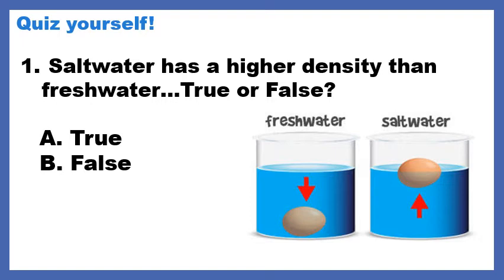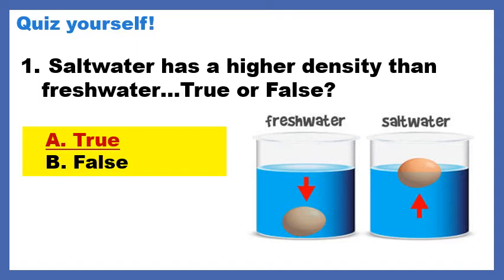So what do you think? Does salt water have a higher density based on what you learned from yesterday and what I just explained in this picture? It's true. Salt water has a higher density because there are more particles squeezed into that solution — we have water molecules plus salt molecules. This is why you might feel a little more buoyant, or like you float more, in salt water. It's true. You do.